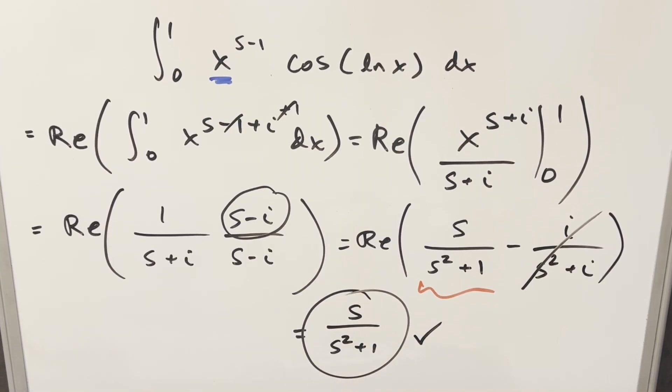So our solution is s over s squared plus 1. Pretty quick and easy — a nice example with the complex method. Thanks everyone for the suggestion, and thanks to Sid again for the problem.